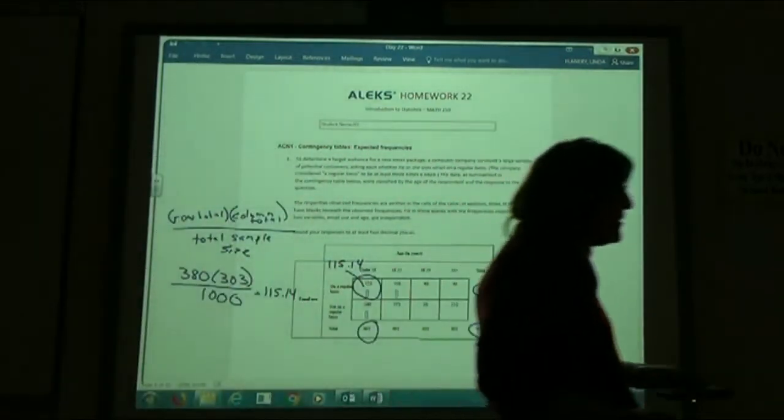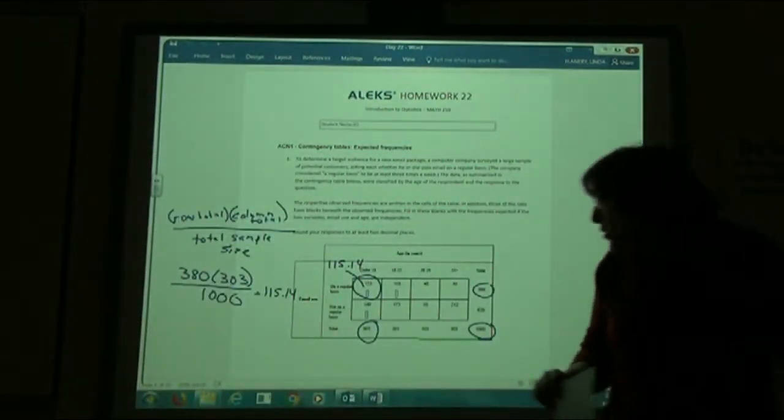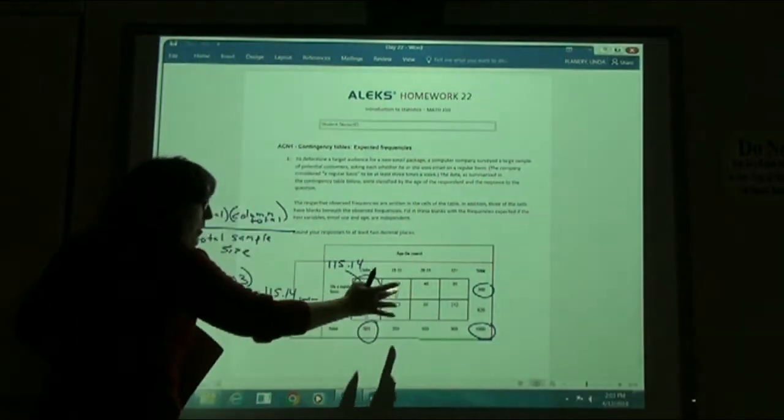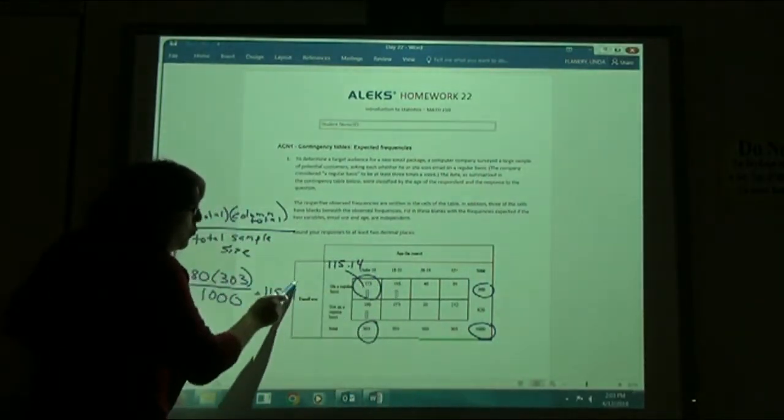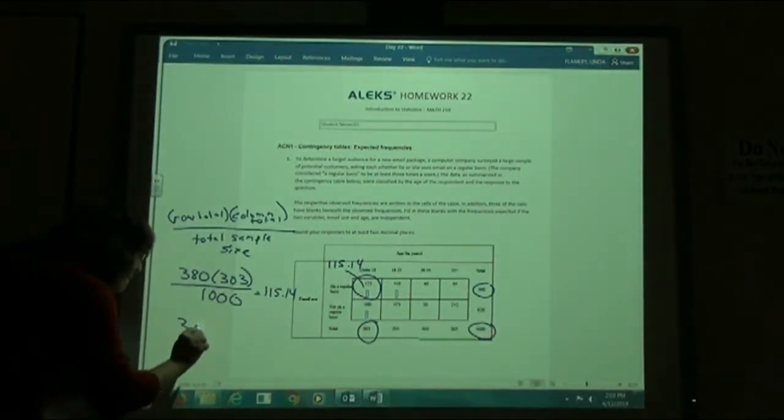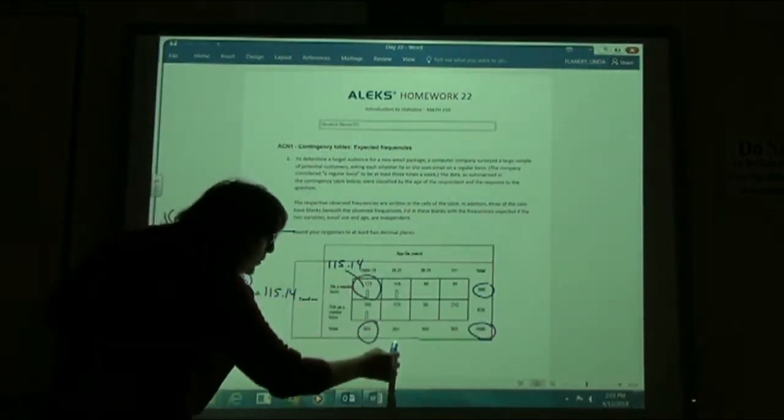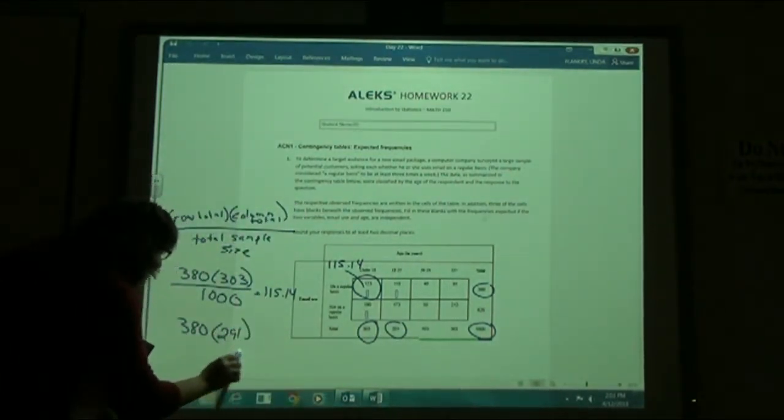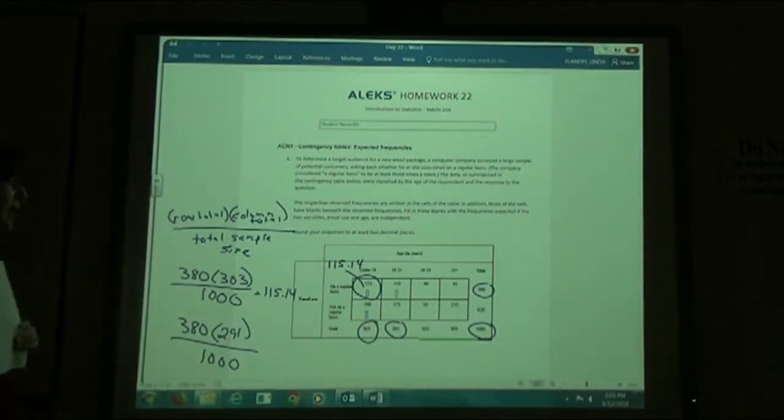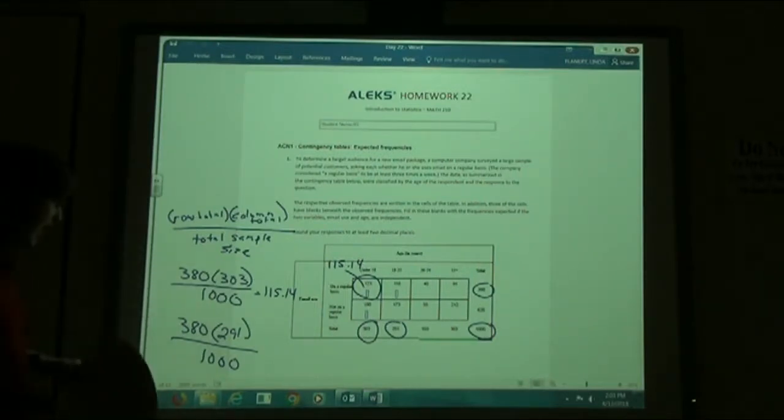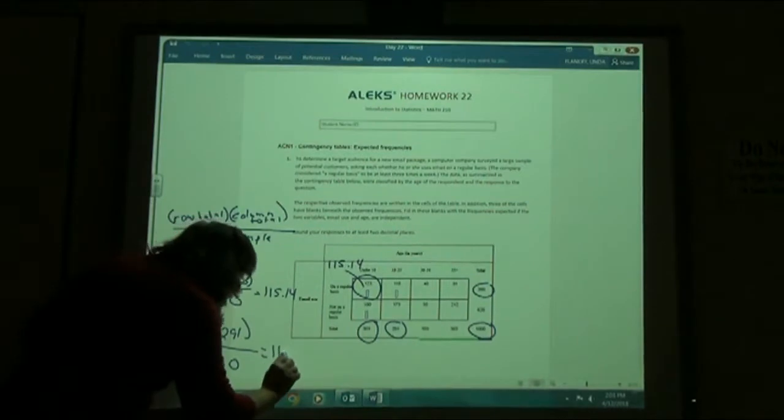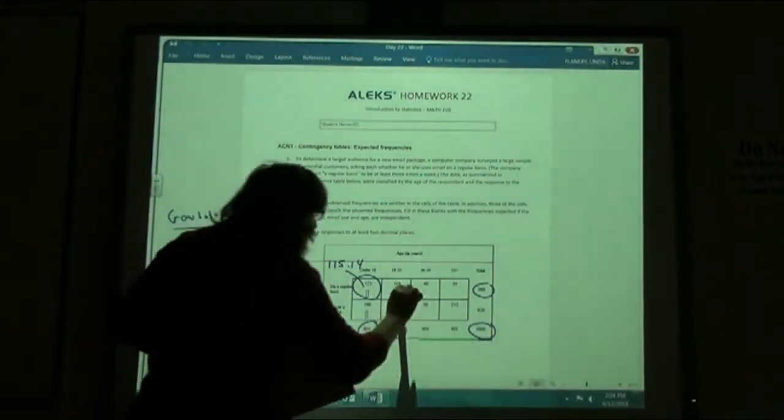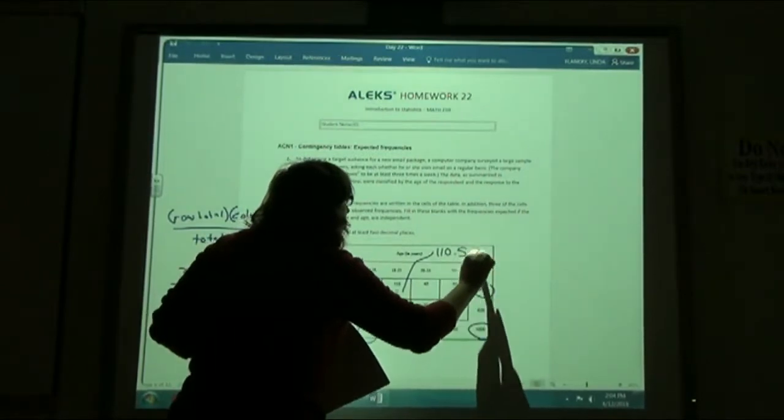And then basically you're going to do the exact same thing for the other two parts. So if I'm going to do this one here, my row total is 380 times my column total, this time my column total is the 291, divided by a thousand. If you punch that in, you should get 110.58. So this box here, 110.58.